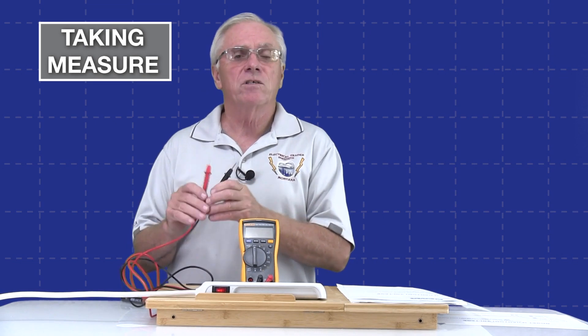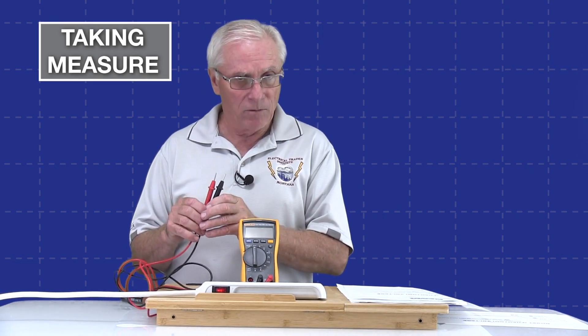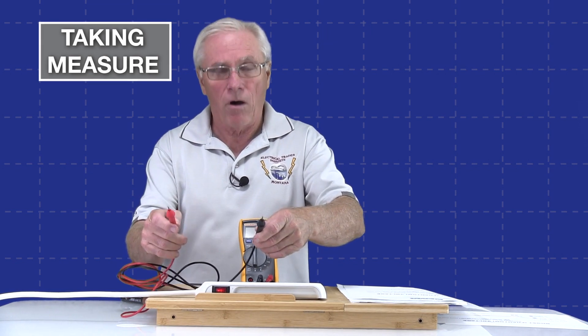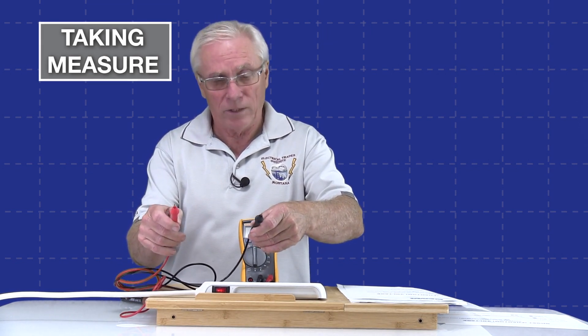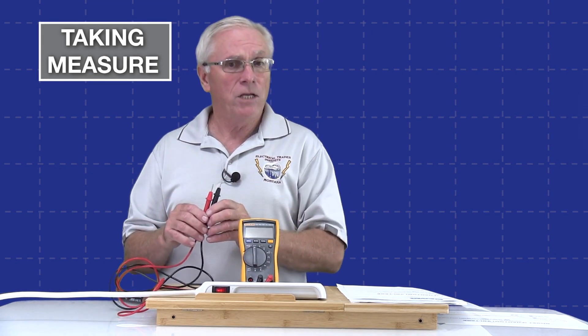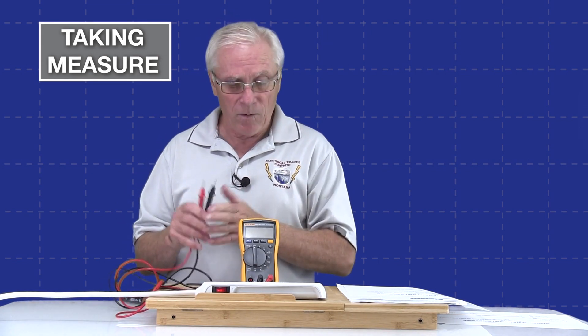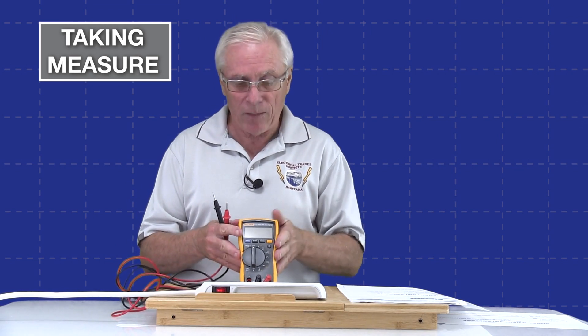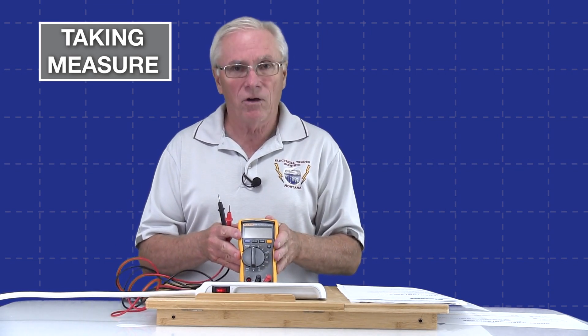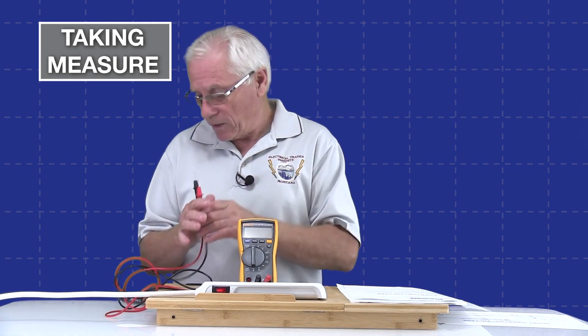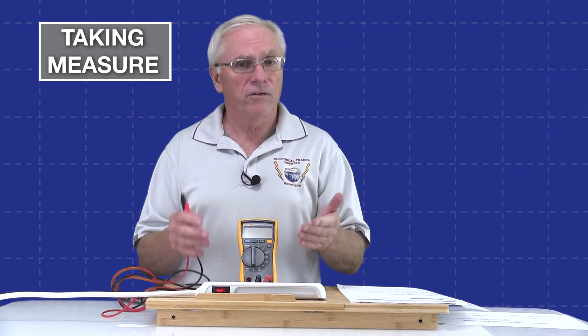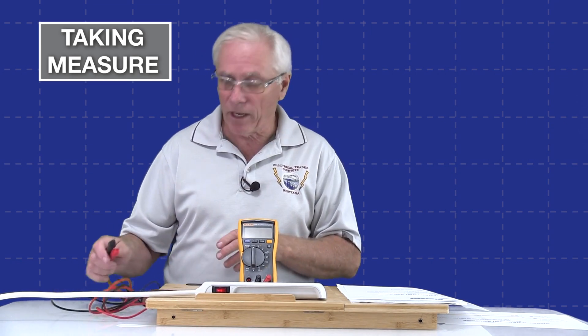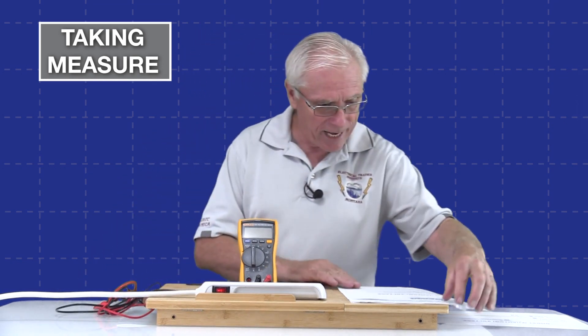When we talked in a previous video about meter loading, we discussed how when you take measure of a circuit, you're drawing voltage and also taking current into your meter and you can change the circuit and maybe impact the operation of a circuit. So they started developing meters with a high impedance input like this one. And in doing so, that also works with capacitive coupling to create the phenomenon of ghost voltage.